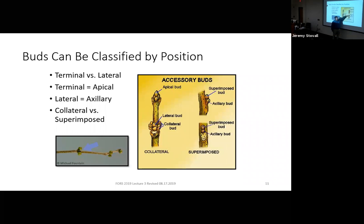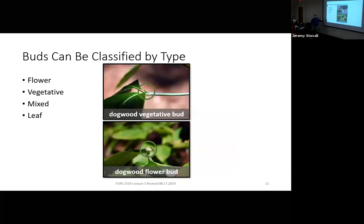On some species like black gum, we see superimposed or superposed buds, where one bud is above another bud. One bud may break open and form a new twig, and the other may form a leaf or a flower. Sometimes you can tell what a bud is going to produce just by looking at it. On flowering dogwood, flower buds look like a little Hershey kiss shape, while vegetative buds look like dull little cat claws. Sometimes we have mixed buds — on many of our pines, a bud has the strobili that will form the cones as well as vegetative material, all wrapped together in scales.